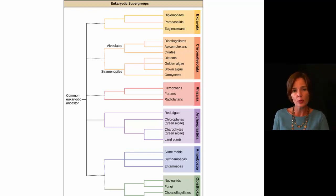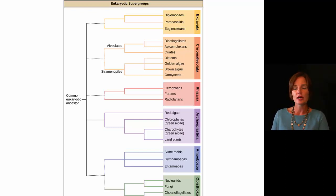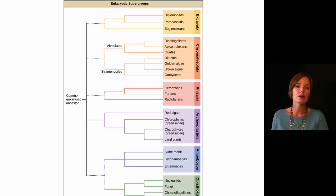Every single one of these supergroups does contain protists within it. So the protists are not all going to be similar to each other by any means, and that's why we say they're a very diverse group.